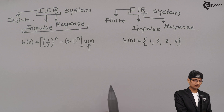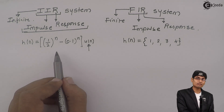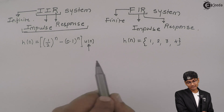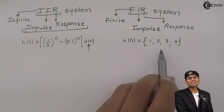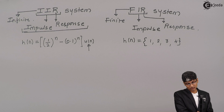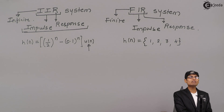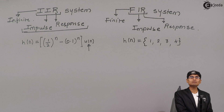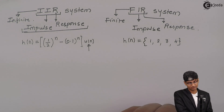Infinite length impulse responses are called IIR, and finite length impulse responses are called FIR. The system which has such an infinite impulse response will be called an IIR system, whereas a system with a finite impulse response will be called an FIR system. Now, how to identify whether a given system is an FIR or an IIR system from a system equation or the difference equation?